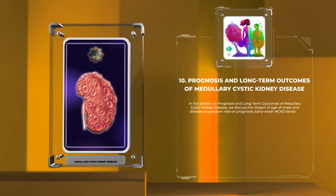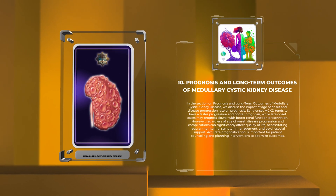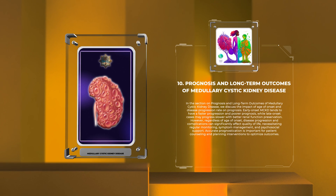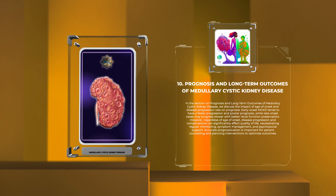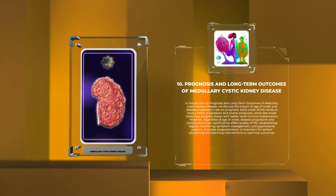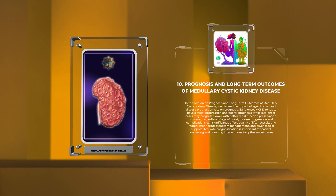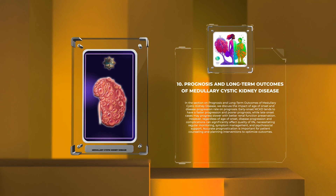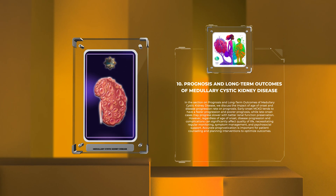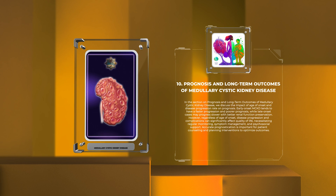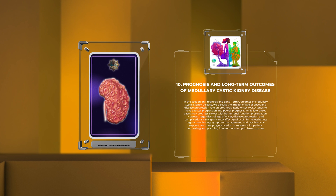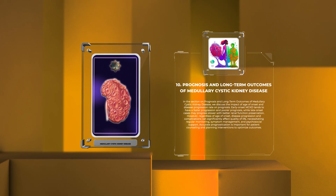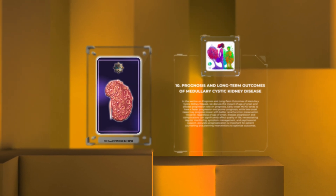Regarding prognosis and long-term outcomes, the age of onset and disease progression rate significantly impact prognosis. Early-onset MCKD tends to have a faster progression and poorer prognosis, while late-onset cases may progress slower with better renal function preservation. Regardless of age of onset, disease progression and complications can significantly affect quality of life, necessitating regular monitoring, symptom management, and psychosocial support. Accurate prognostication is important for patient counseling and planning interventions to optimize outcomes.